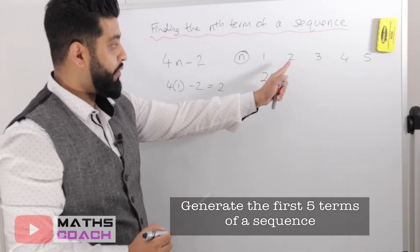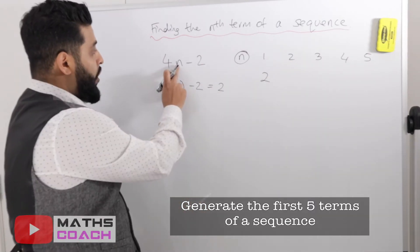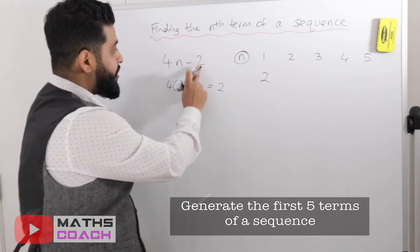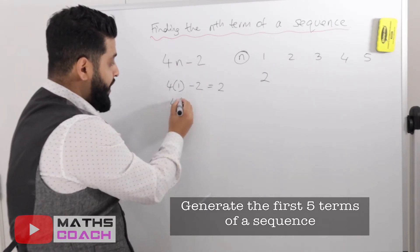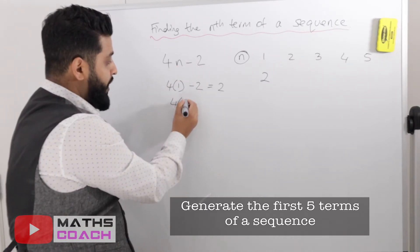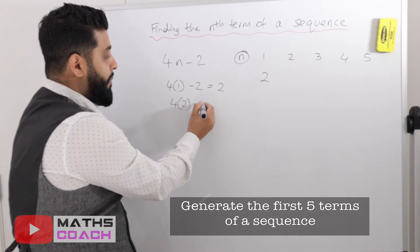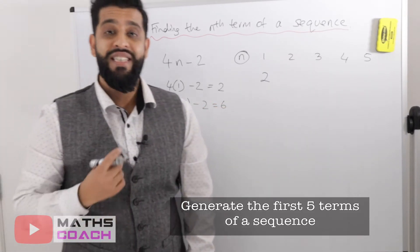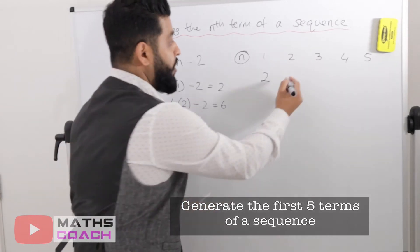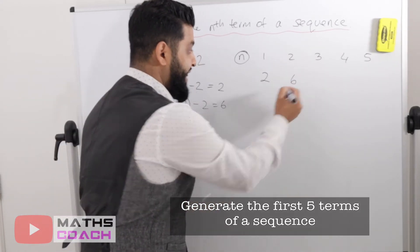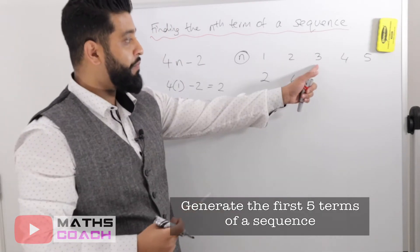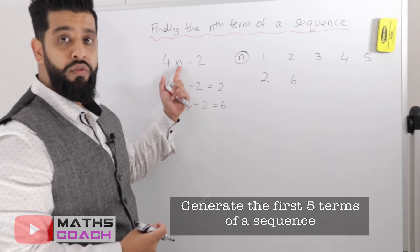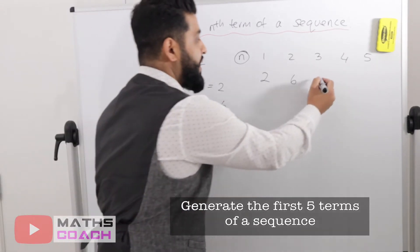For the second term we put in 2, so 4 times 2 which is 8, minus 2 equals 6. So the second term is 6. For the third term, 4 times 3 which is 12, take away 2, which is 10.